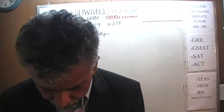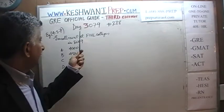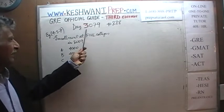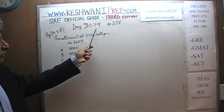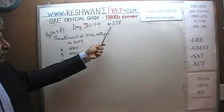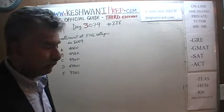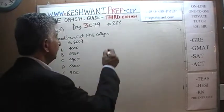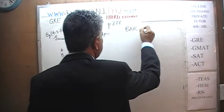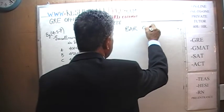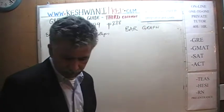Today is our lesson number 79 — day 3079. The 3 indicates that we are in the third edition, day 79. We are on page 288, and the topic we'll cover today is bar graphs. Let's get going.